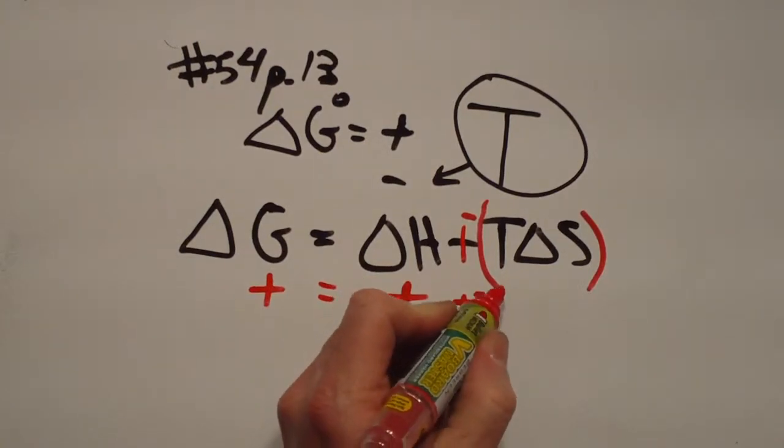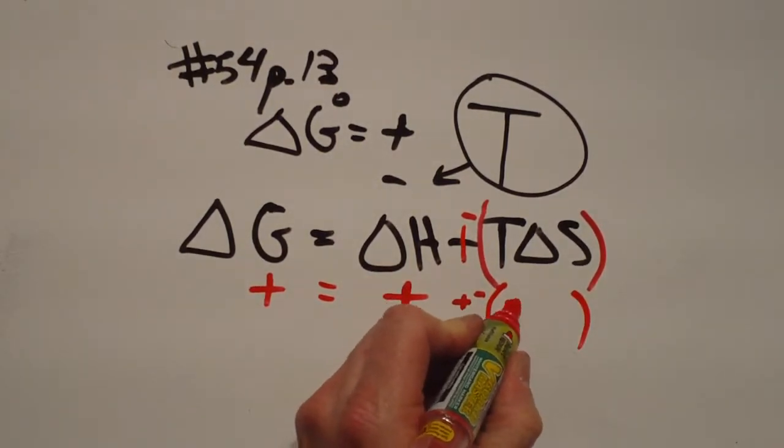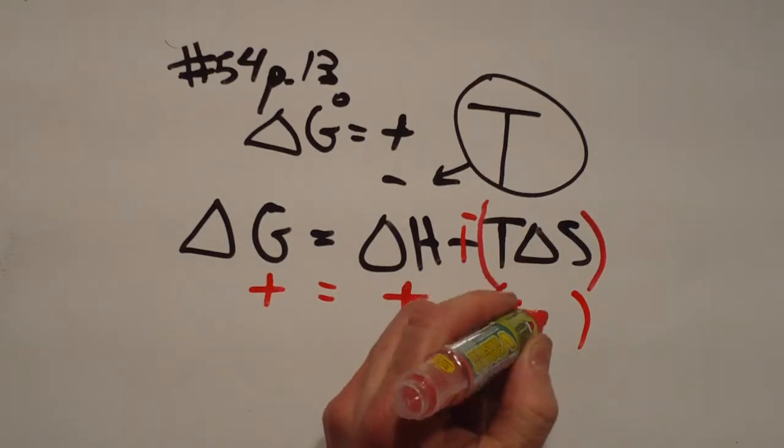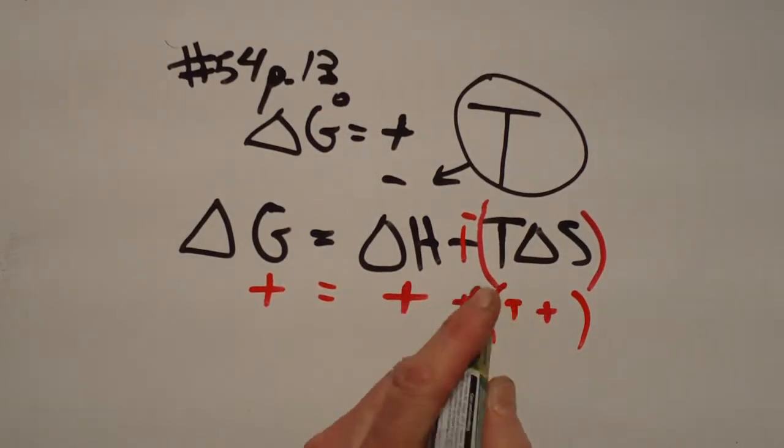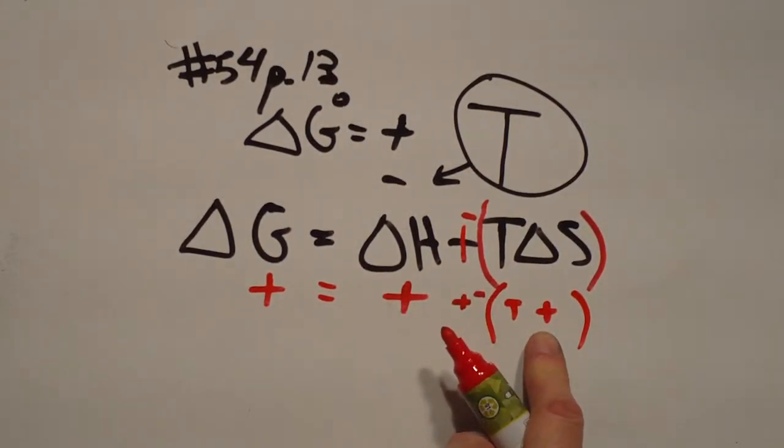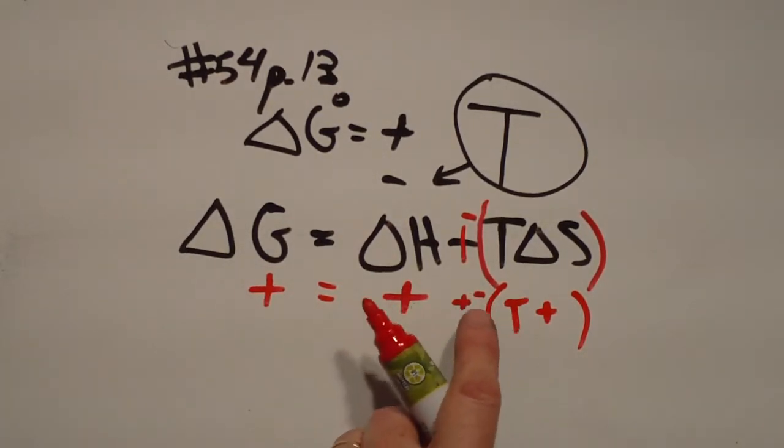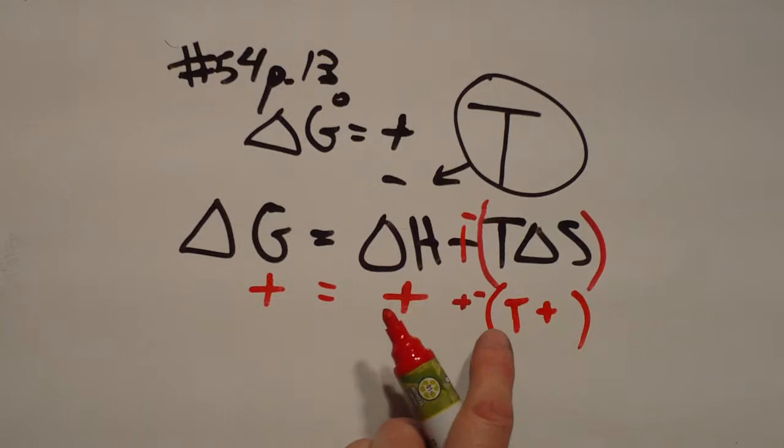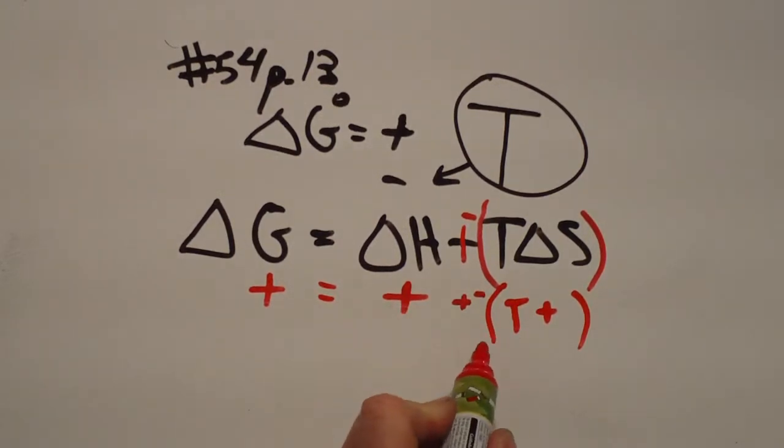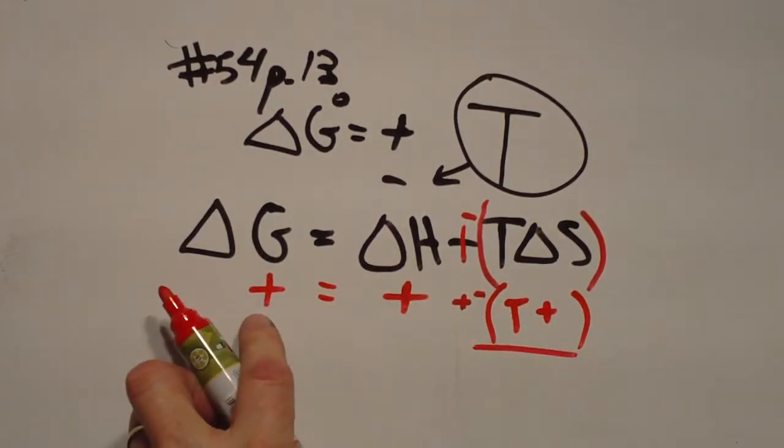And so, under low temperatures, T being very small, and delta S being somewhat positive, delta S has to start out positive, because that's the only way that this would be negative. But if this term is smaller than that term, it can still be positive.